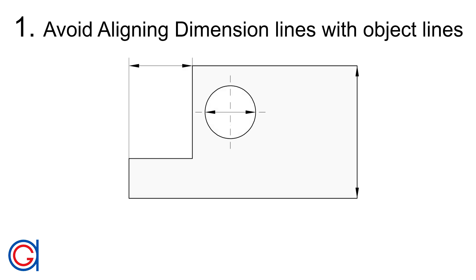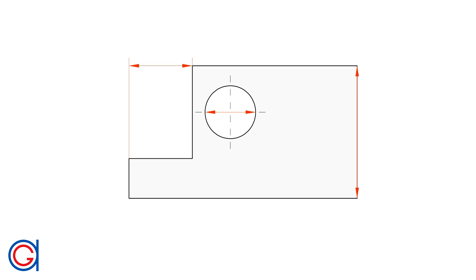The first rule is to avoid aligning dimension lines with object lines or axes, as you can see in red on the screen. The proper way to do this is to separate the dimension lines from the object lines, as shown here with the green lines on the screen.